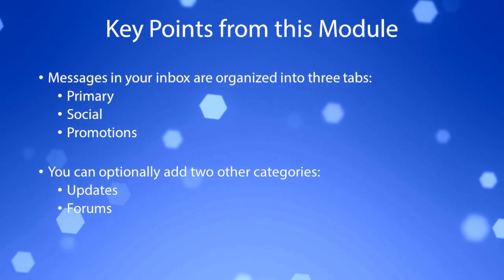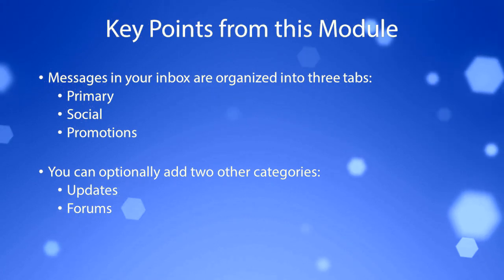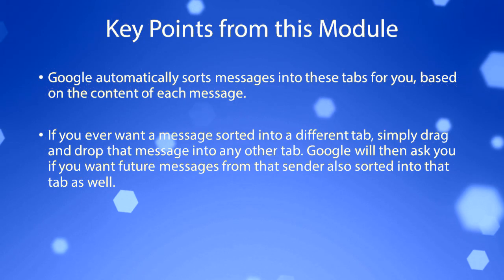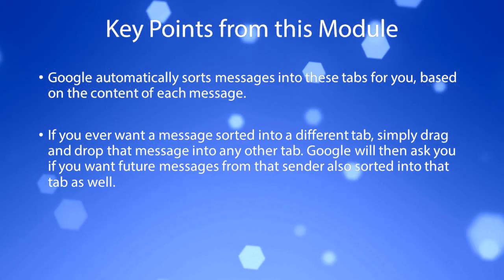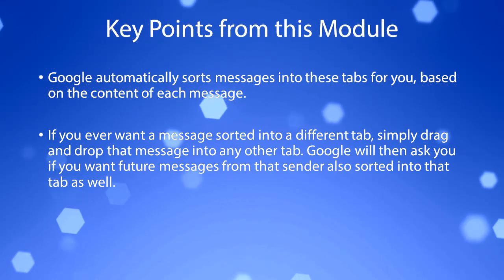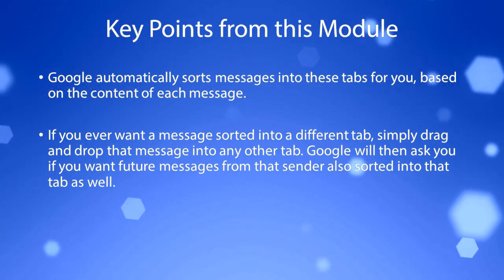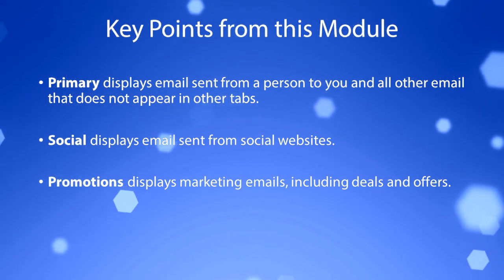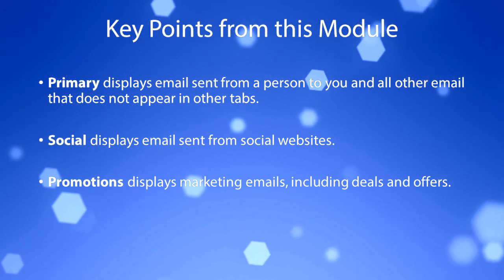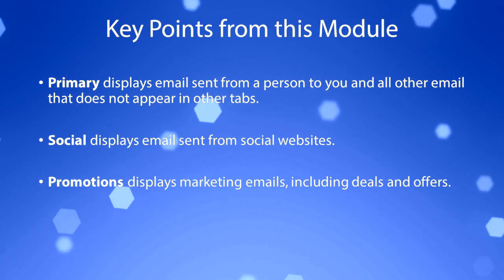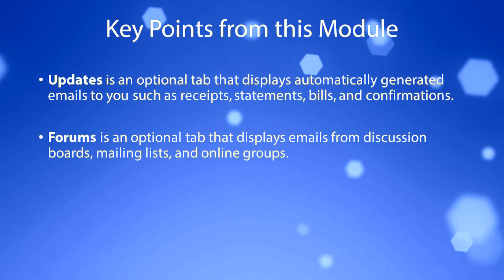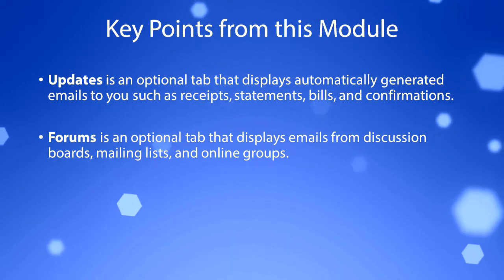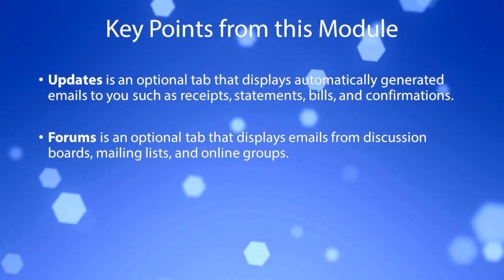Messages in your inbox are organized into three tabs: primary, social, and promotions. You can optionally add two other categories: updates and forums. Google automatically sorts messages into these tabs based on the content of each message. If you ever want a message sorted into a different tab, simply drag and drop it into any other tab — Google will then ask if you want future messages from that sender sorted into that tab as well. Primary displays emails sent from a person to you and all other email that does not appear in other tabs. Social displays emails from social websites. Promotions displays marketing emails including deals and offers. Updates is an optional tab displaying auto-generated emails such as receipts, statements, bills, and confirmations. Forums is an optional tab displaying emails from discussion boards, mailing lists, and online groups.